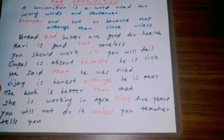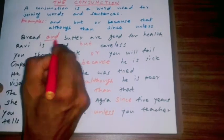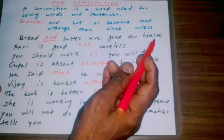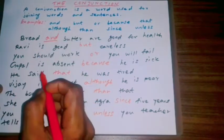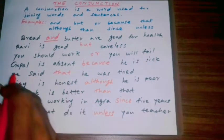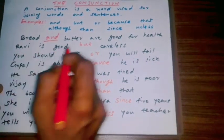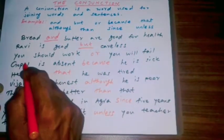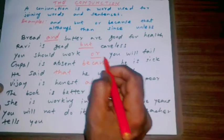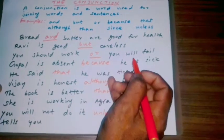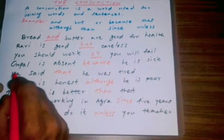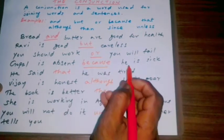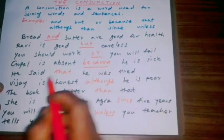Bread and butter are good for health — 'and' is a conjunction. Rabbi is good but careless. You should work or you will fail. Gopal is absent because he is sick — 'because' is a conjunction.